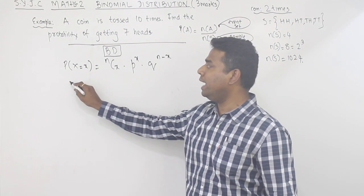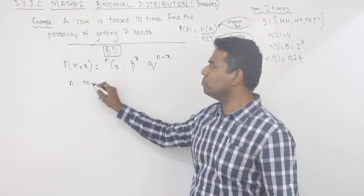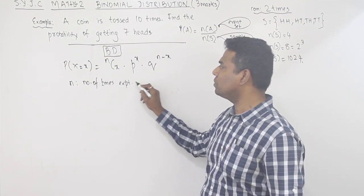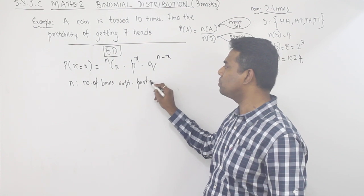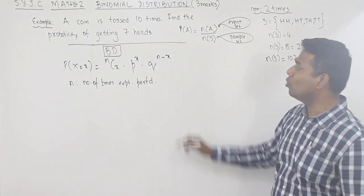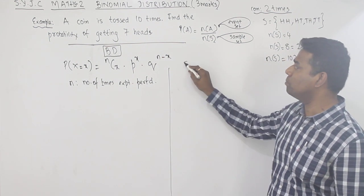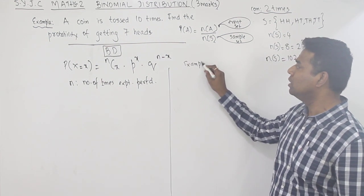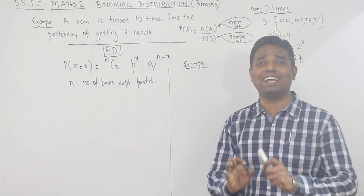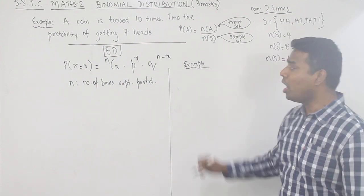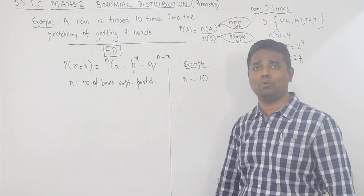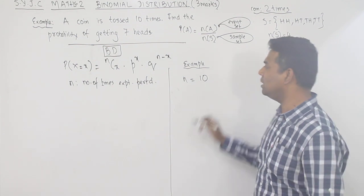First, what is n? n is the number of times the experiment is performed. Going back to this example — we are tossing the coin 10 times, so how many times have we performed the experiment? 10 times. Therefore n = 10.